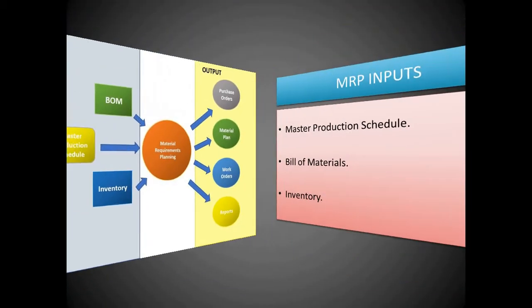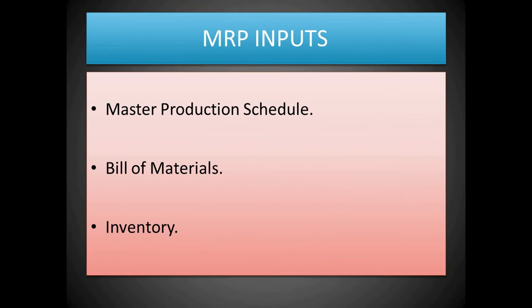We will see what these inputs are used for in MRP. Master Production Schedule has its own inputs, which are in turn required: Forecast and Work Orders, and Bill of Materials and Inventory. These are the inputs for MRP.